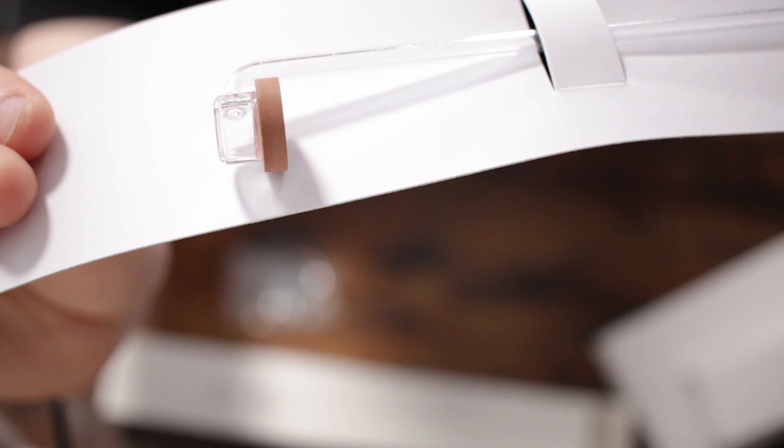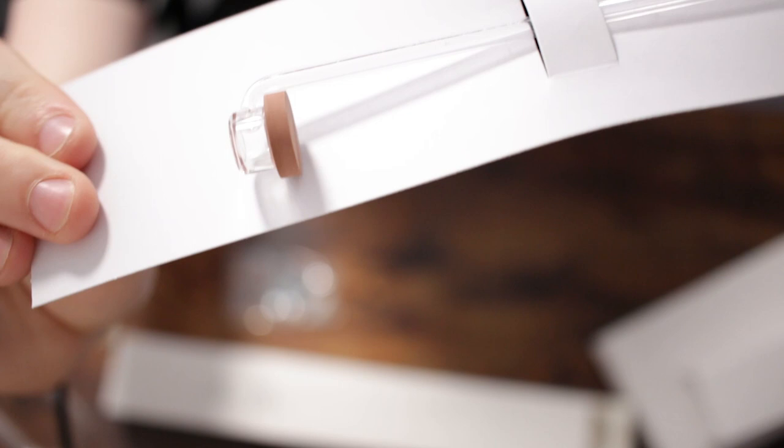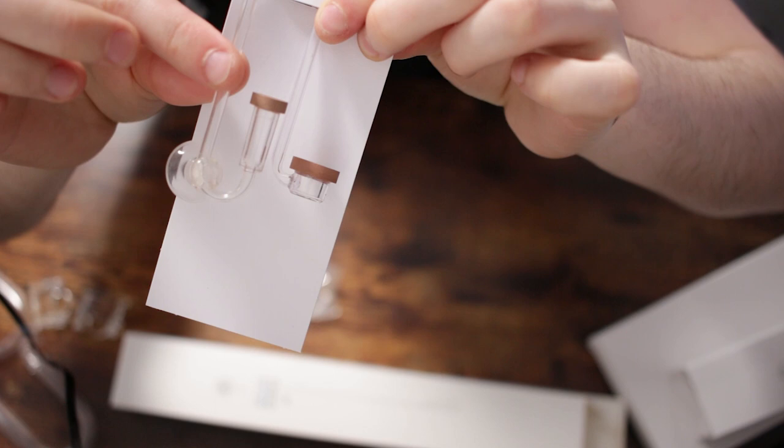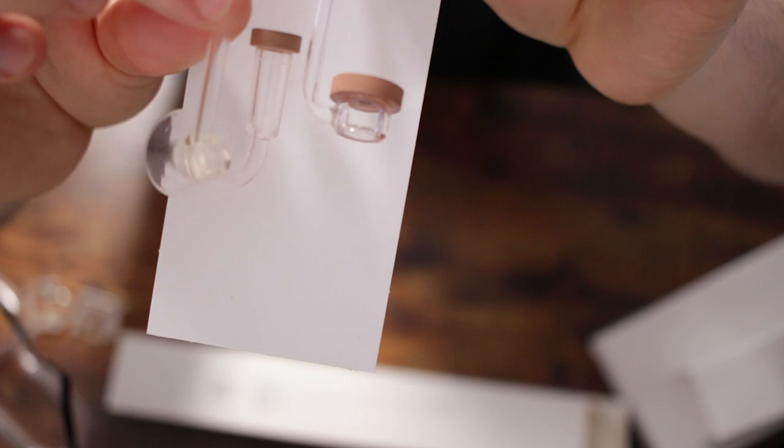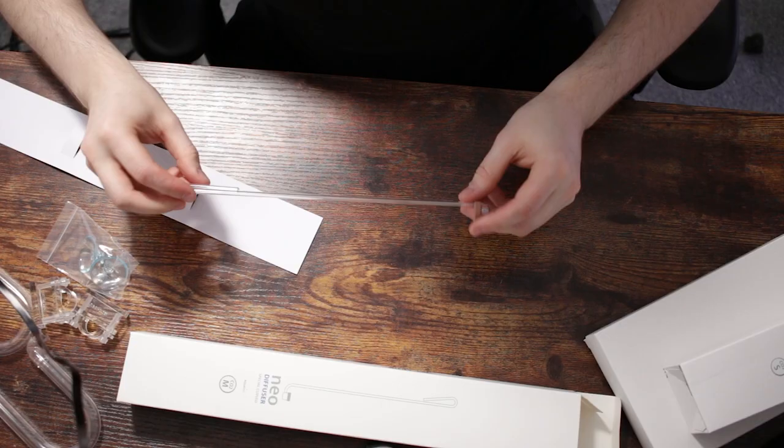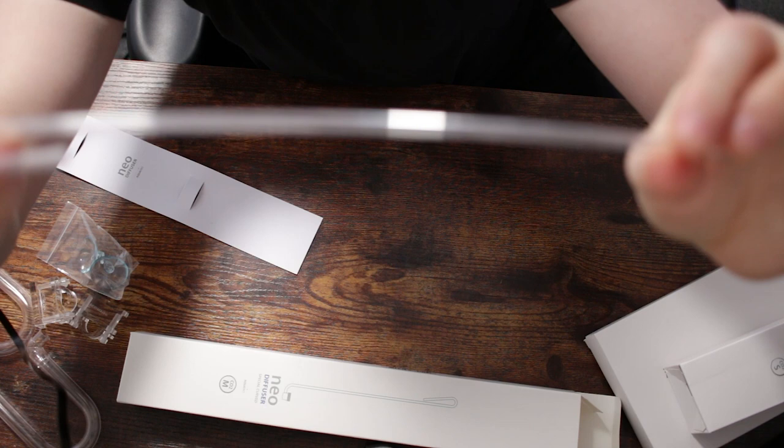So as you can see, the new design versus the old design of the Aquario. This one's more compact. Just for a comparison. So we've got the new Neo diffusers. And this is the old Aquario Neo diffusers. So as you can see, the new design is very much more compact versus the older style. Just thought that would be a neat comparison for you guys. And once again, these are bendy. I wouldn't go too far with it, but they're definitely bendy.